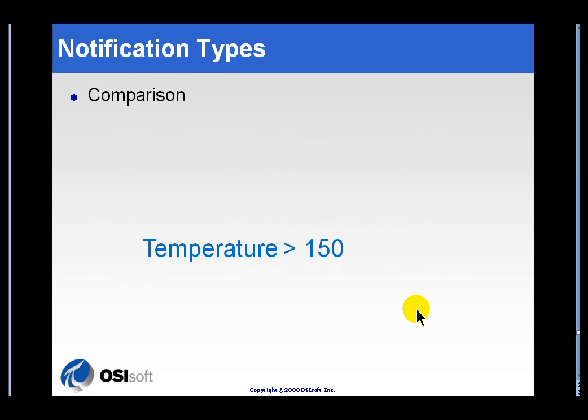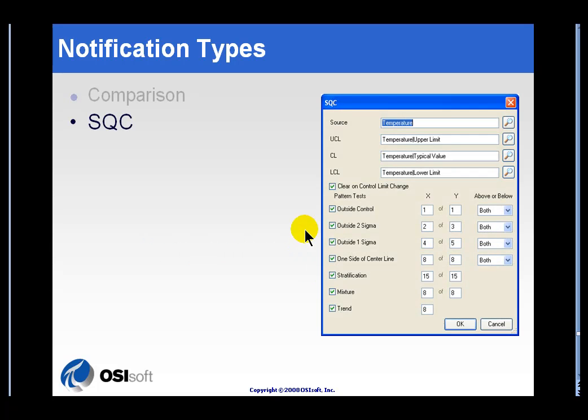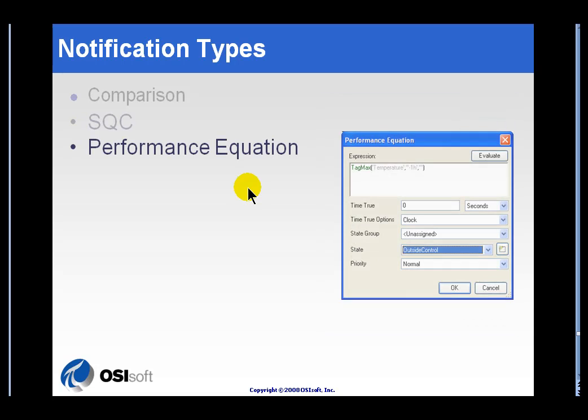All of this would be kind of meaningless if we didn't describe what type of notifications we support. We support simple comparisons. Temperature greater than 150, pressure greater than this. We do all the right logical ANDing and ORing you'd associate with that type of a comparison. We also support statistical quality control, or sometimes called statistical process control, SQC or SPC. The standard Western Electric type alarms are supported. You have flexibility of how you define those alarms.